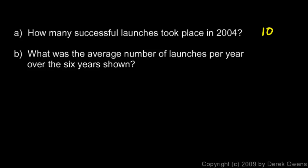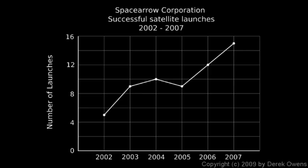The next question: what was the average number of launches per year over the six years shown? For each of the six years, we can read the number off the graph. The first value is right between 4 and 6, so that's obviously 5. Then we read 9, and 10, and 9 again.